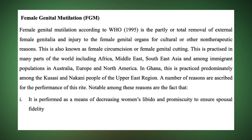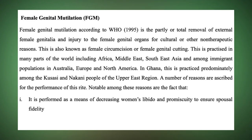The next negative cultural practice is female genital mutilation. According to WHO 1995, female genital mutilation is the partial or total removal of external female genitalia, or injury to the female genital organs for cultural or other non-therapeutic reasons. Female genital mutilation is also referred to as female circumcision or female genital cutting. What happens is that the reproductive system of the woman, especially her clitoris, is removed or cut off for cultural purposes.